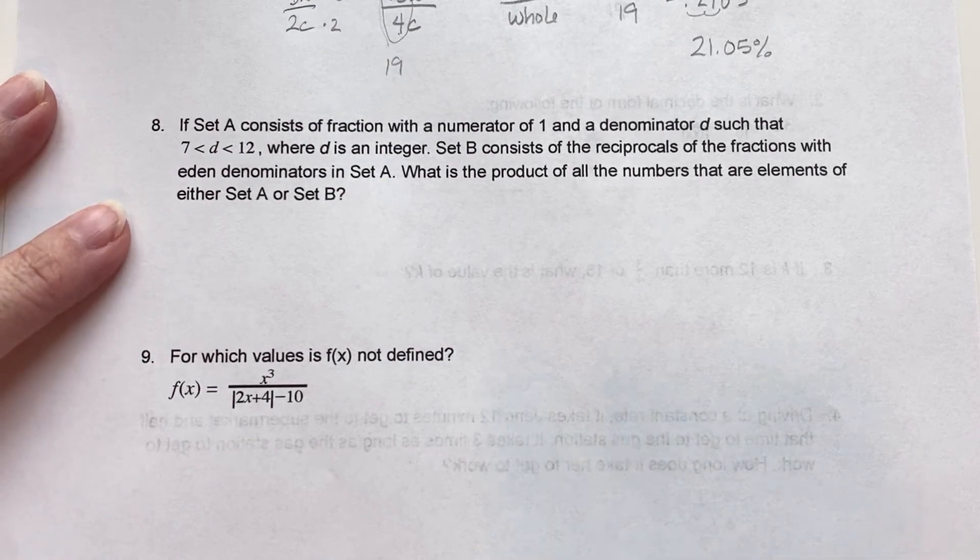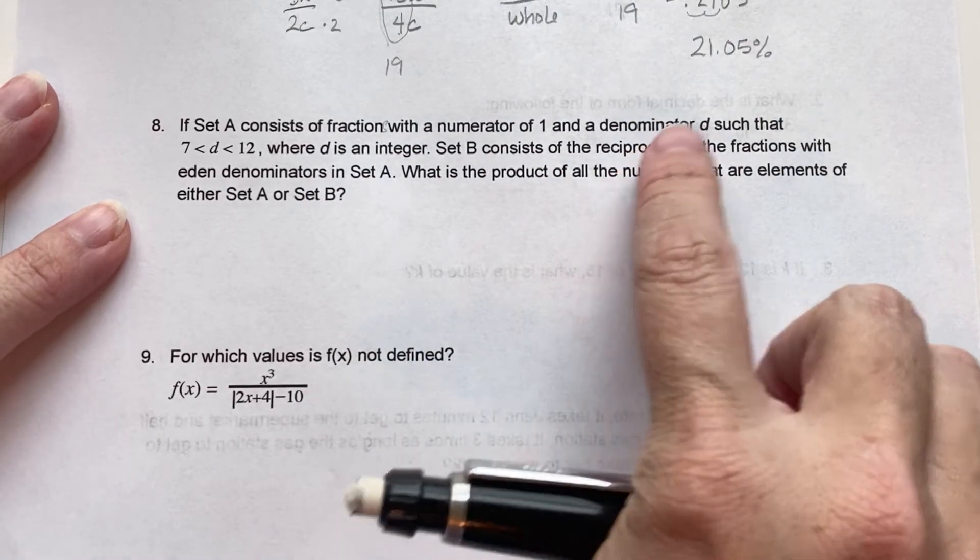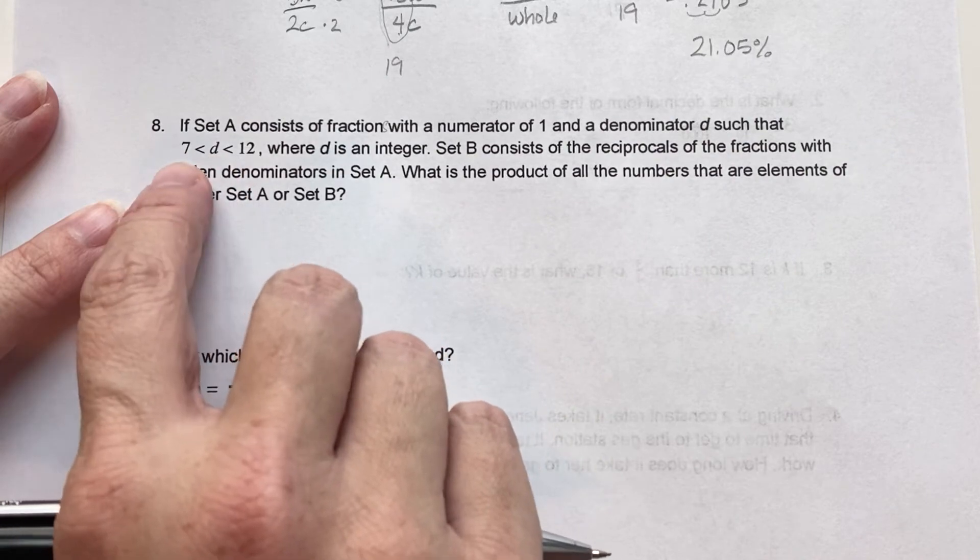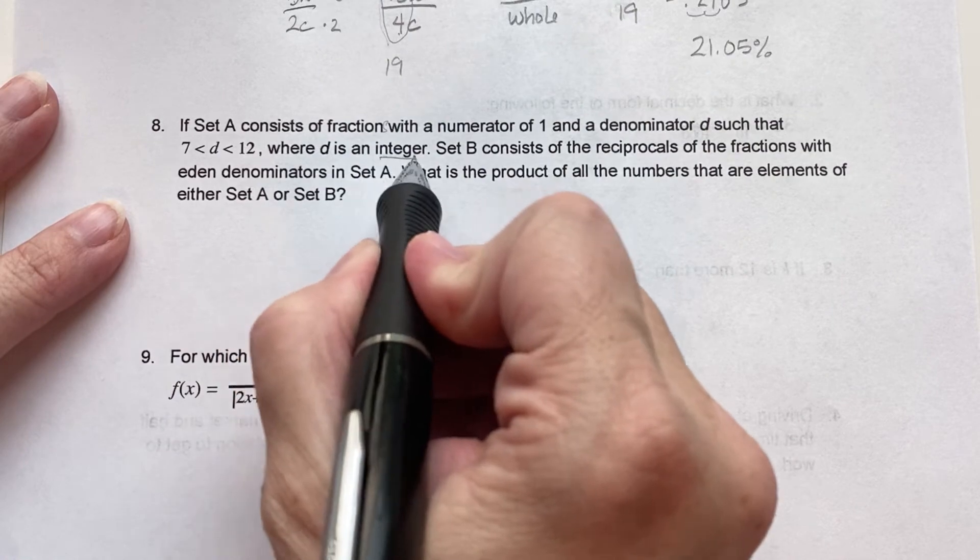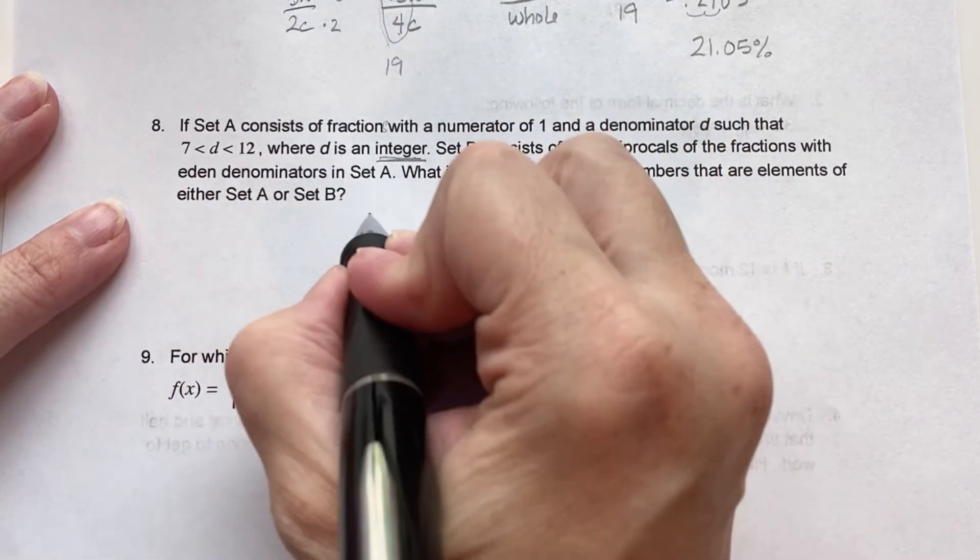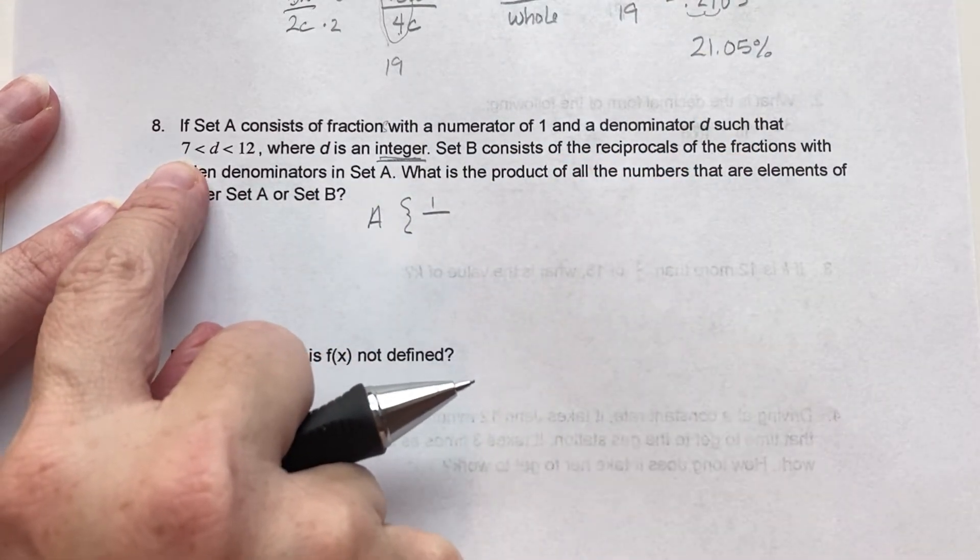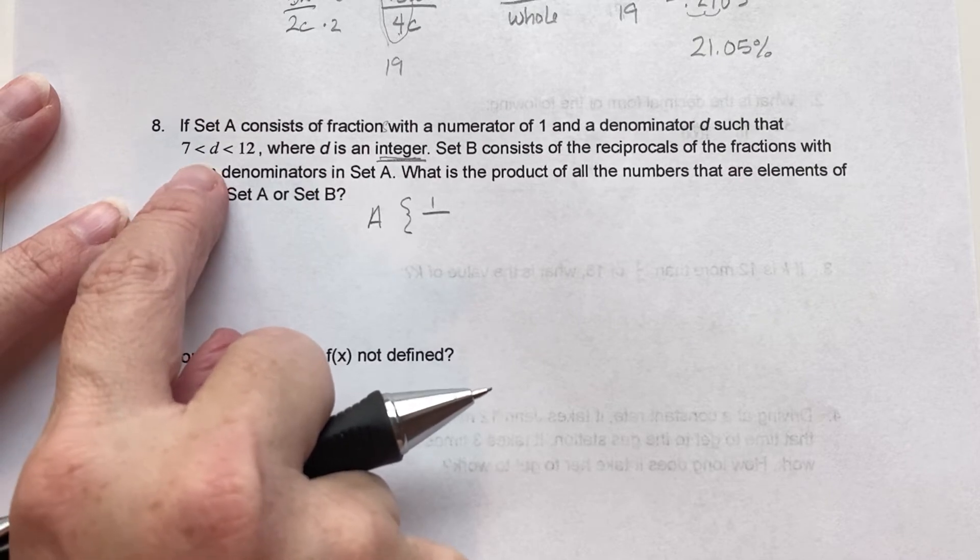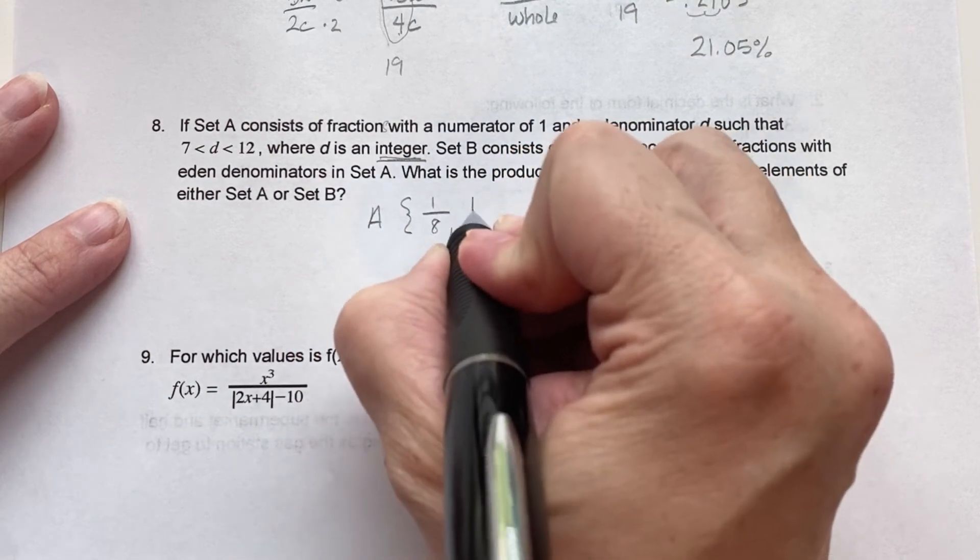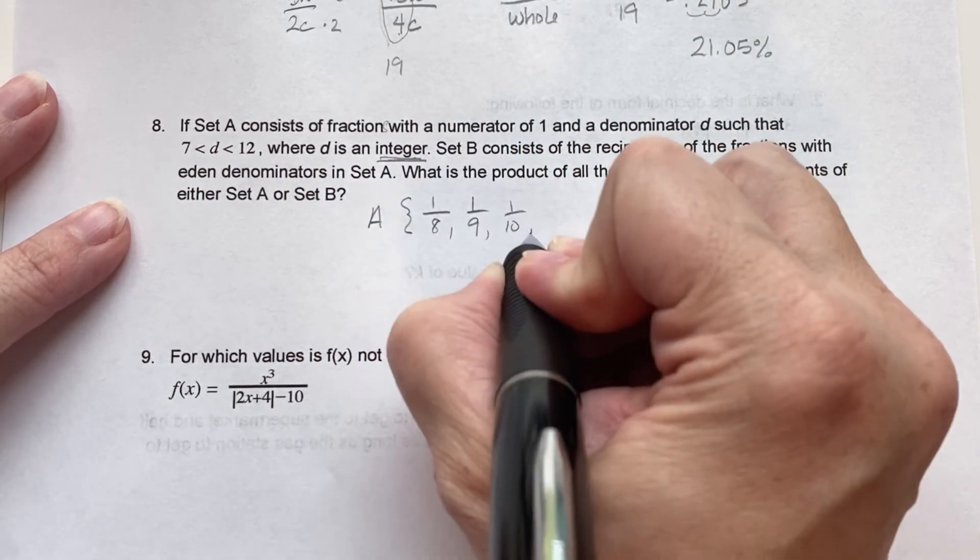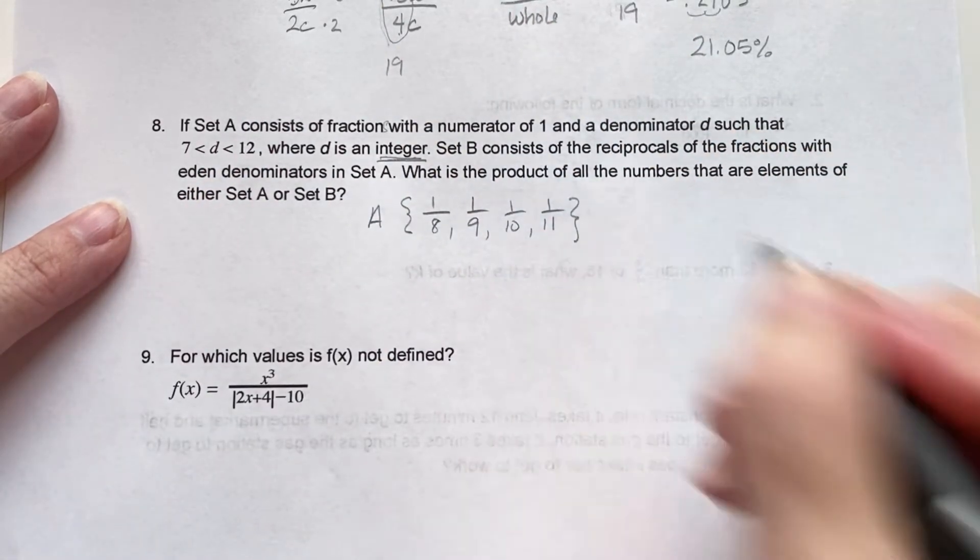If set A consists of fractions with a numerator of 1 and a denominator of D such that D is between 7 and 12, where D is an integer. So that's very important. So our first set A consists of 1 over, and it starts at 7, but if you notice it doesn't say less than or equal to. So really we can't use 7. So it's 1 over 8, 1 over 9, 1 over 10, 1 over 11, and can we use 12? No, because it doesn't have an equal to.